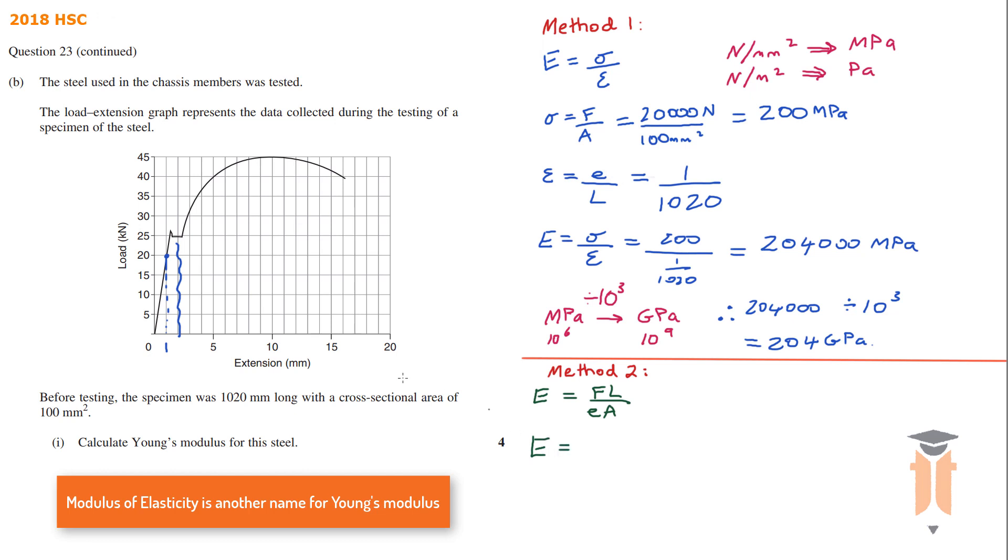So Young's modulus is equal to... Again we're going to use this point there. So 20 kilonewtons. That's 20,000 newtons times the original length, which is 1020, over the extension at that point, which is one millimeter, times the area 100. Put that in the calculator and you get 204,000 megapascals.